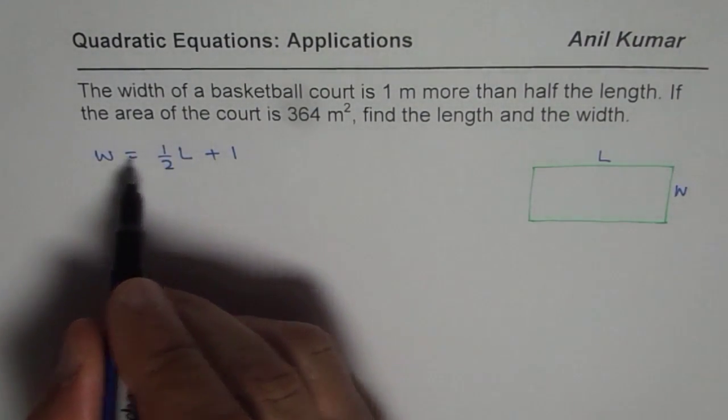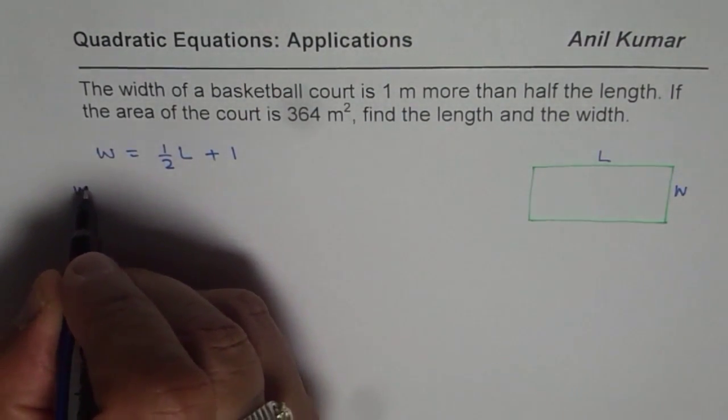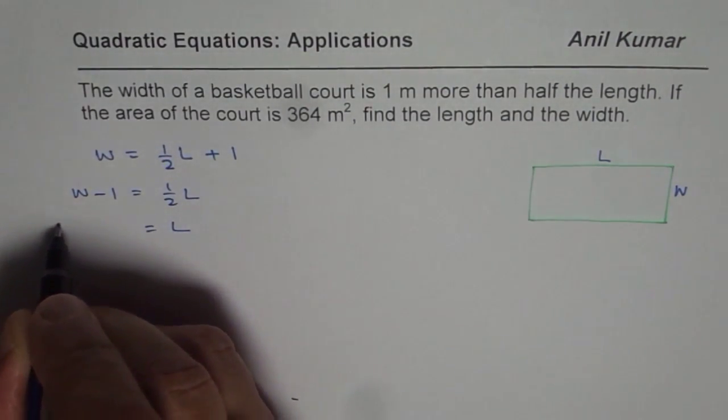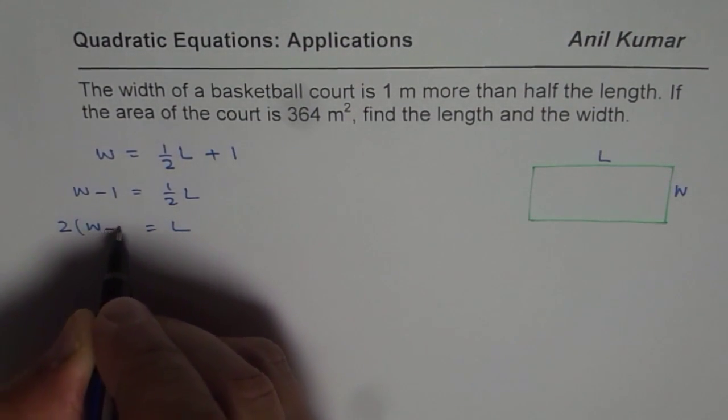So from here, we can write what length is in terms of width. So we get W minus 1 equals half L, or length is equal to 2 times (W minus 1).